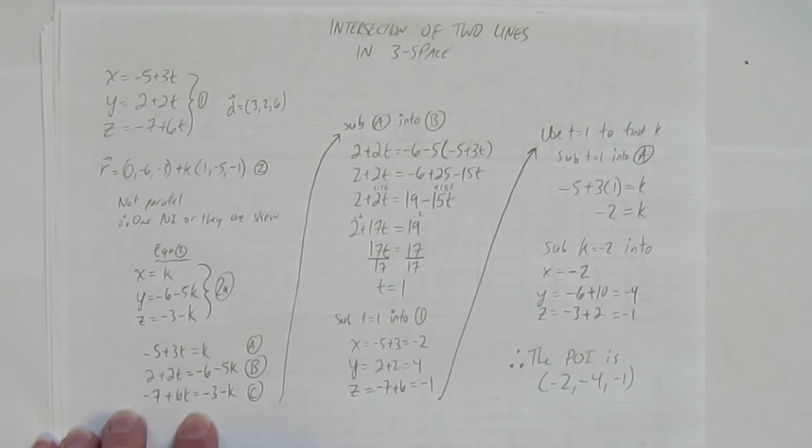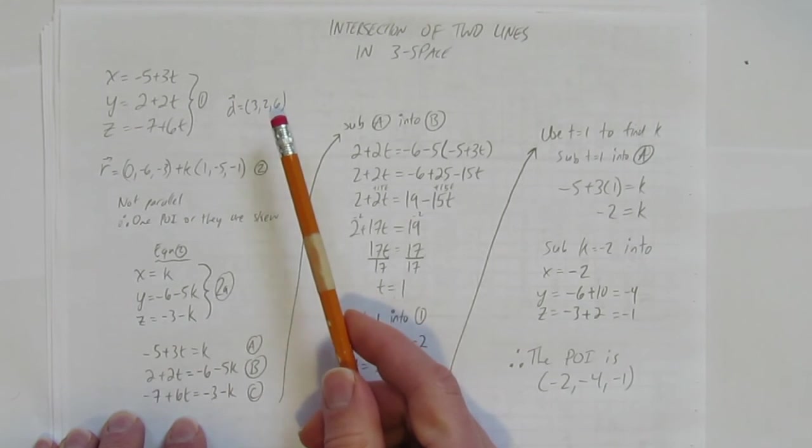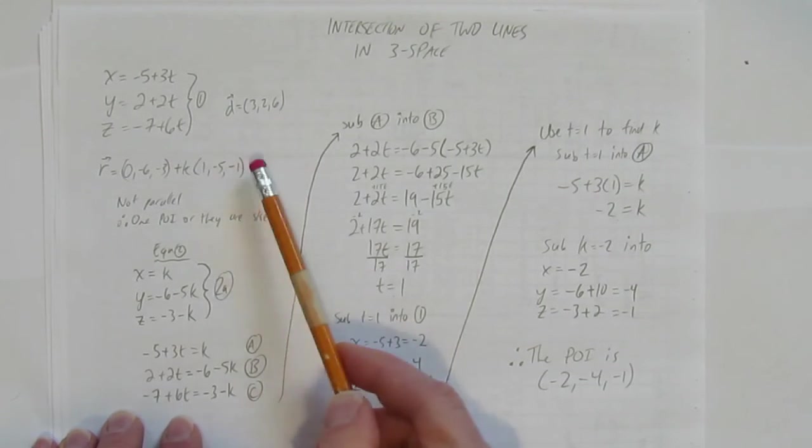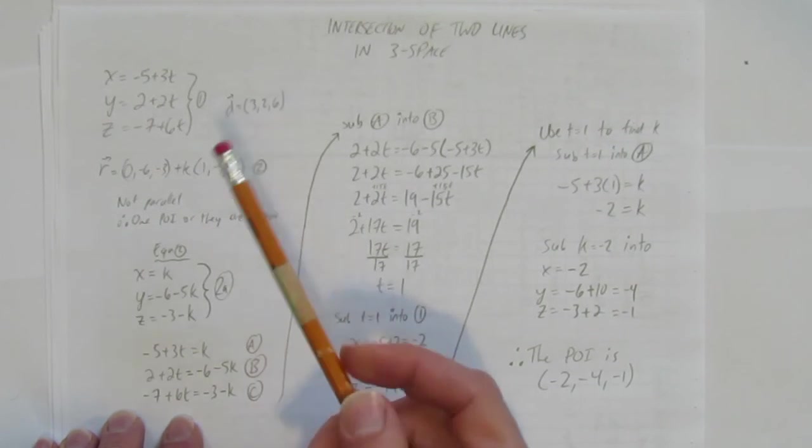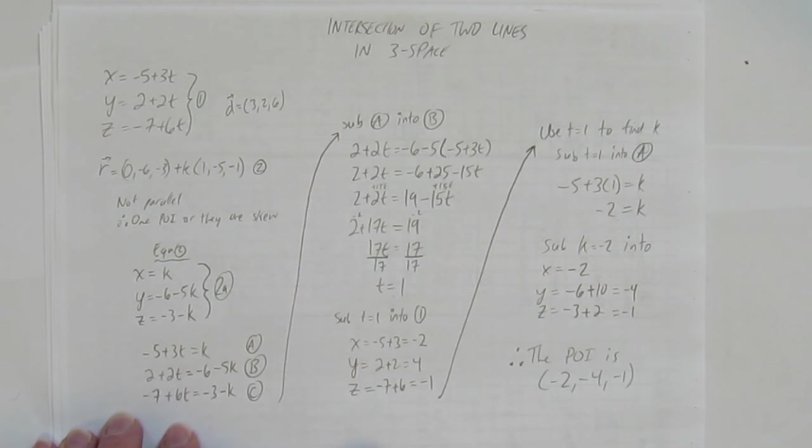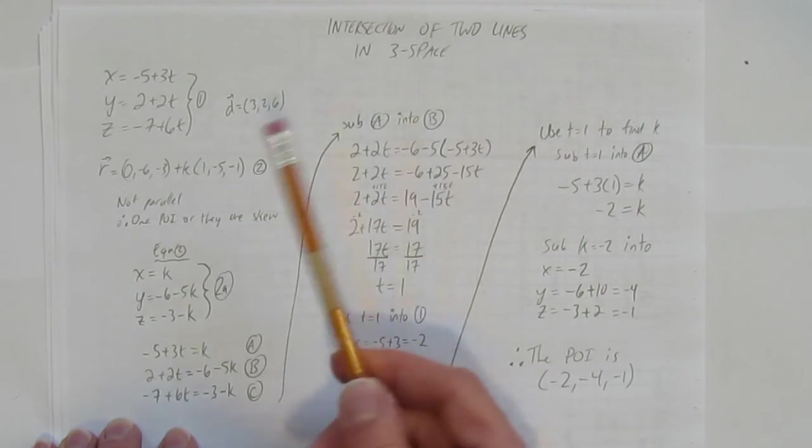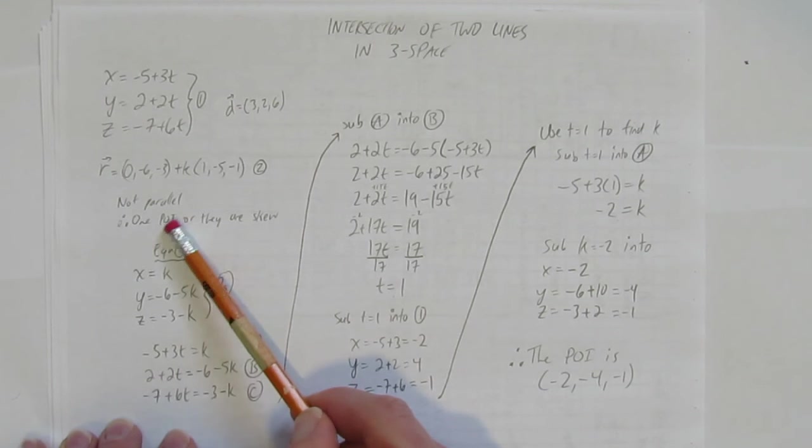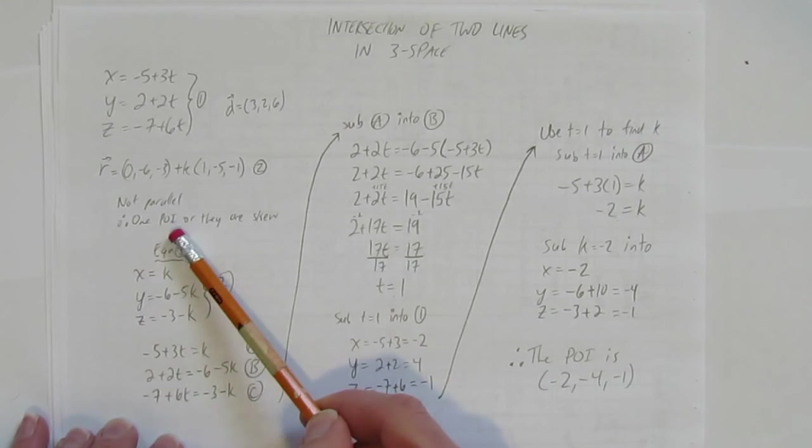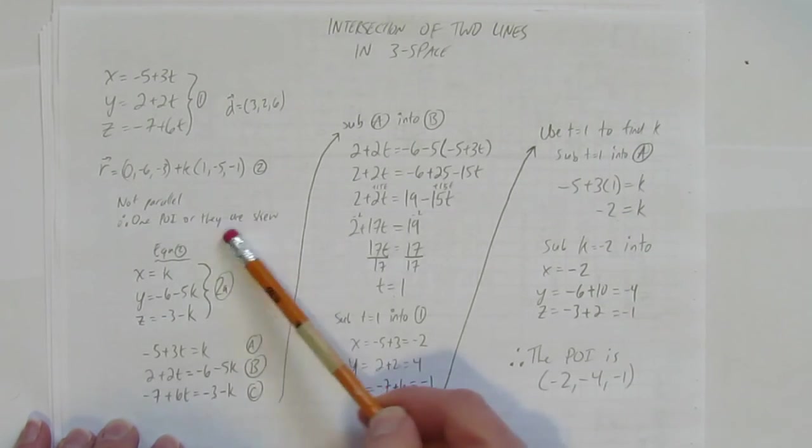We've done it. We found the intersection of two lines. How did we do that? Well, first we looked at their direction vectors and made sure that they weren't parallel, because if they were parallel, we'd have a different situation on our hands. Since they weren't parallel, we knew there's going to be one point of intersection, or are they just both floating in space, never touching? That's skew lines.